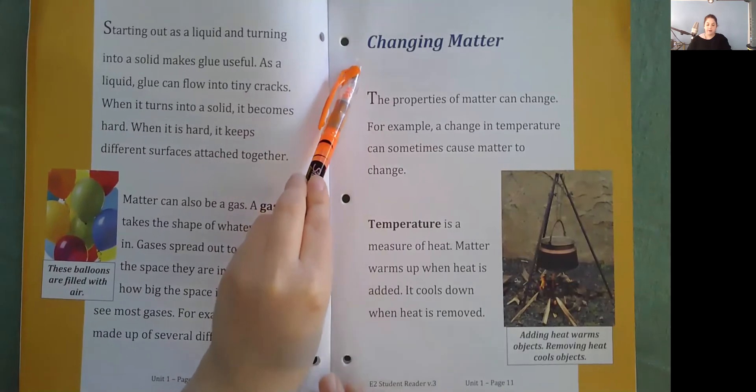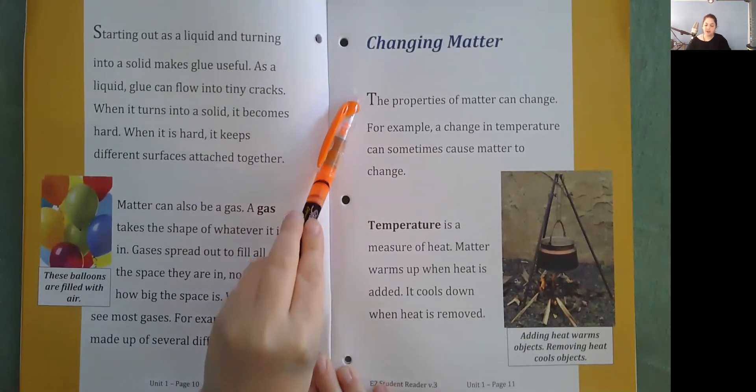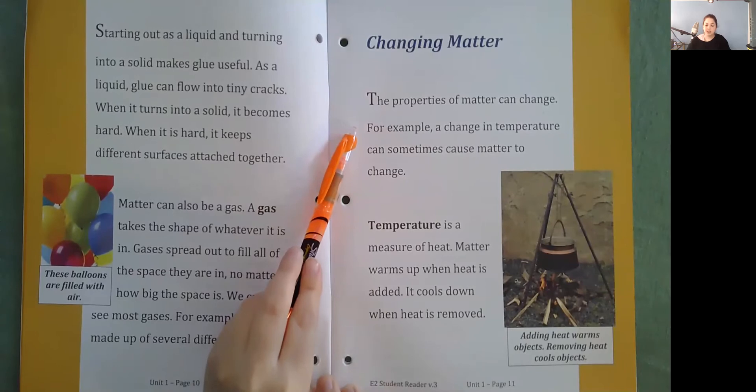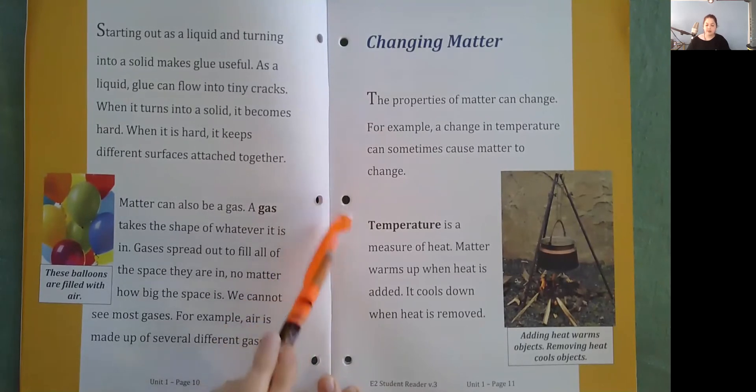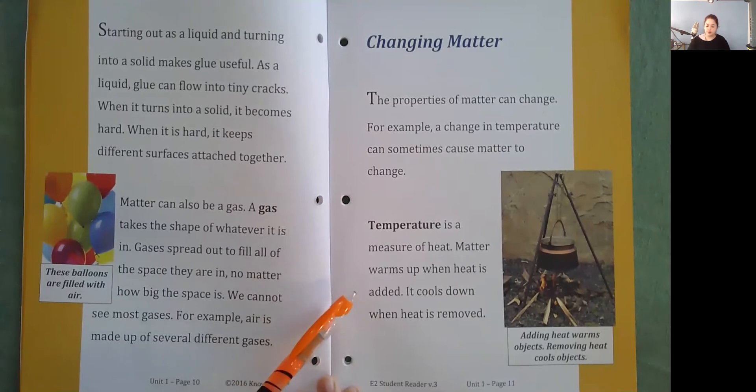Changing matter. The properties of matter can change. For example, a change in temperature can sometimes cause matter to change. Temperature is a measure of heat. Matter warms up when heat is added. It cools down when heat is removed. Adding heat warms objects. Removing heat cools objects.